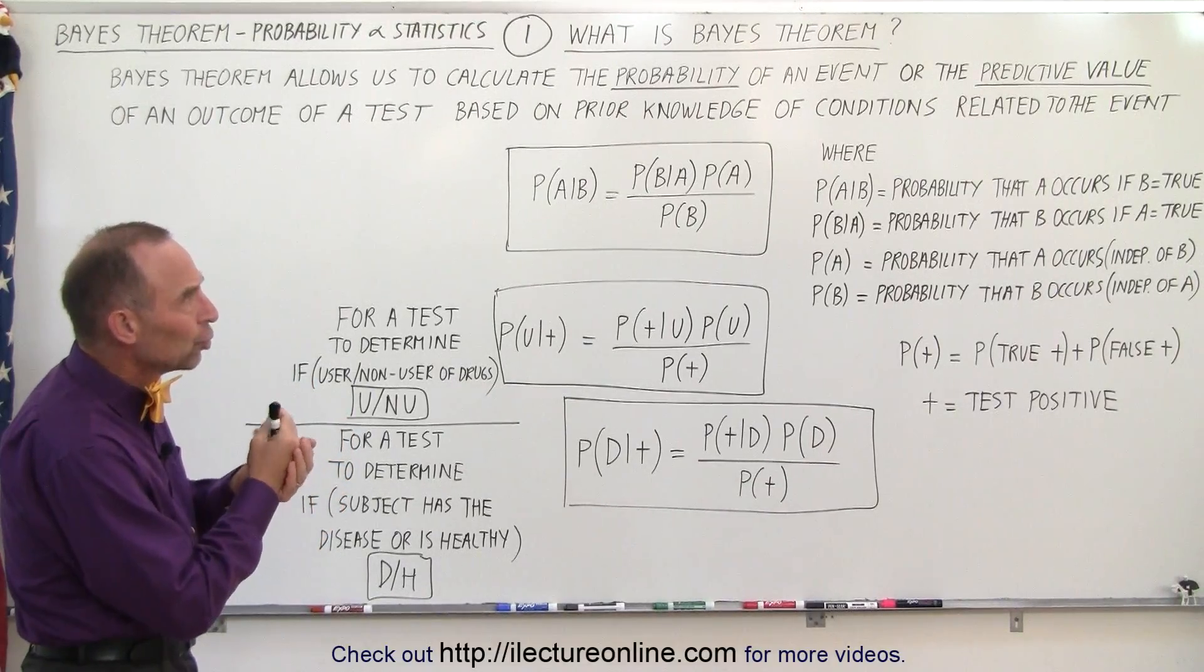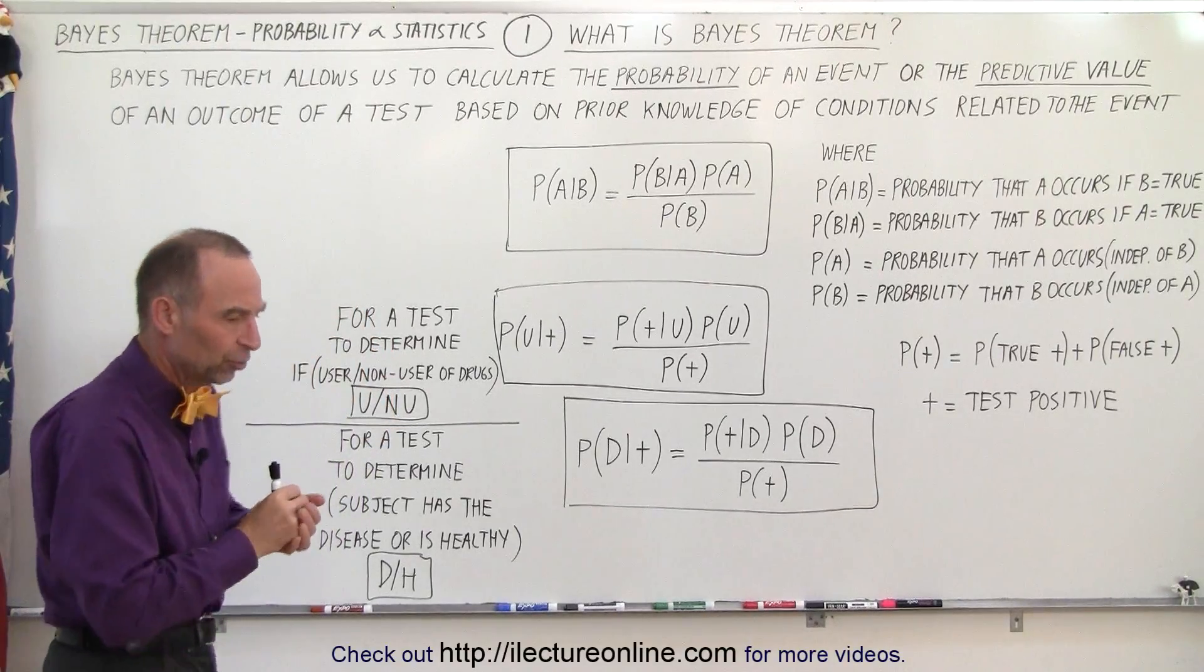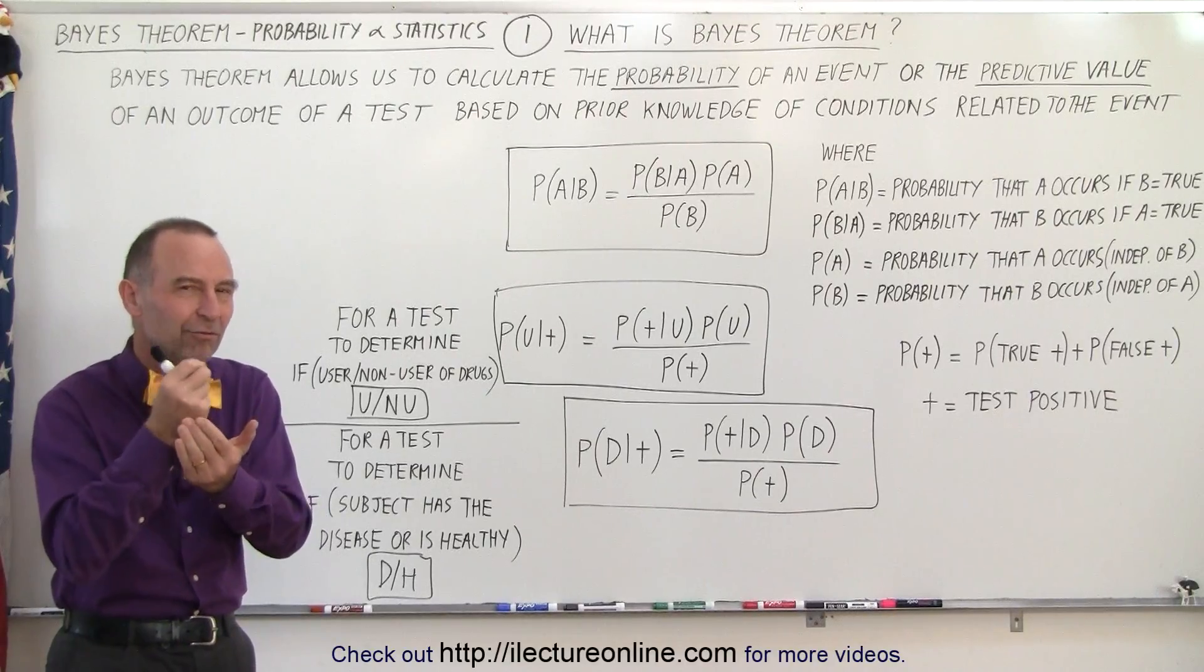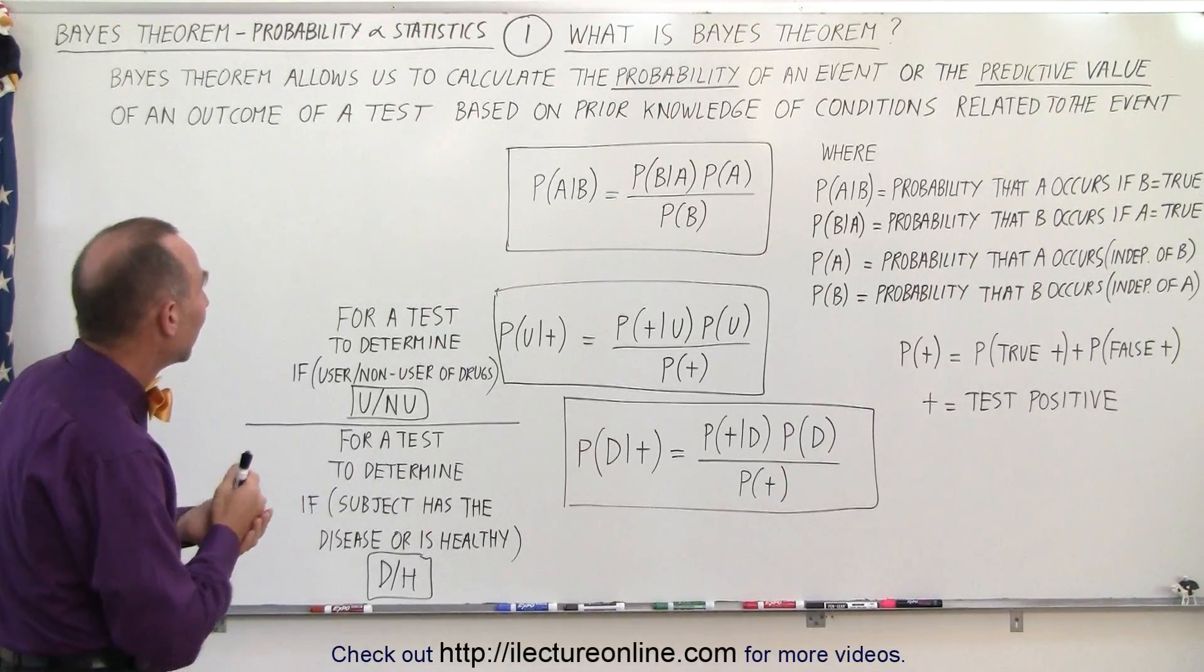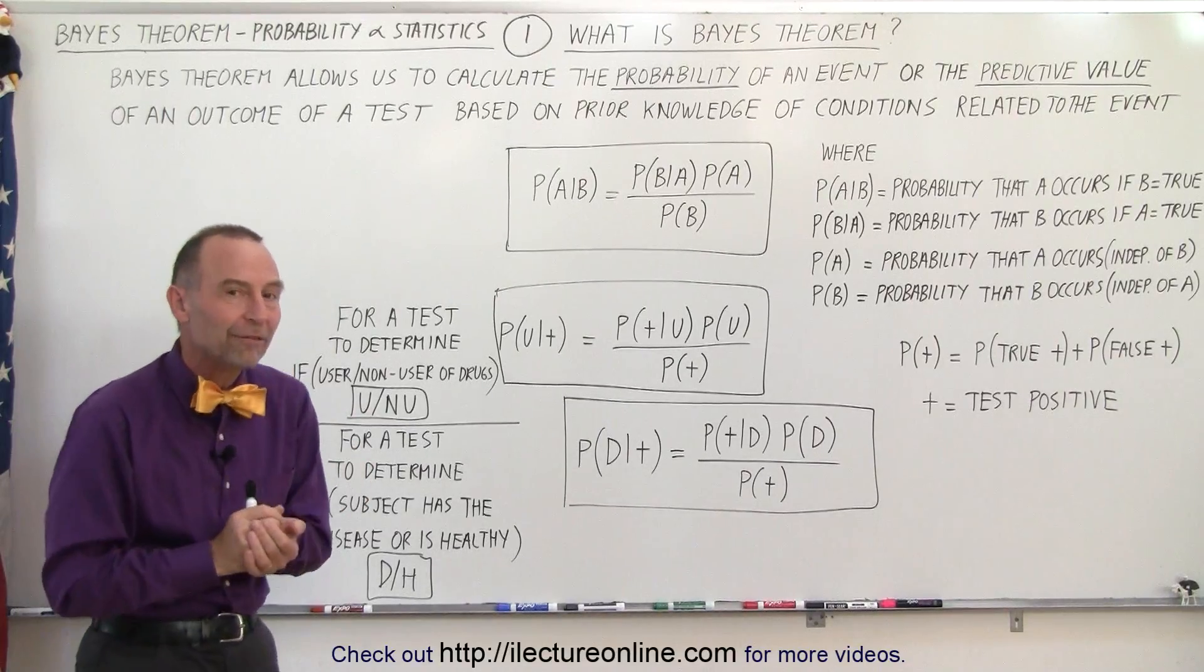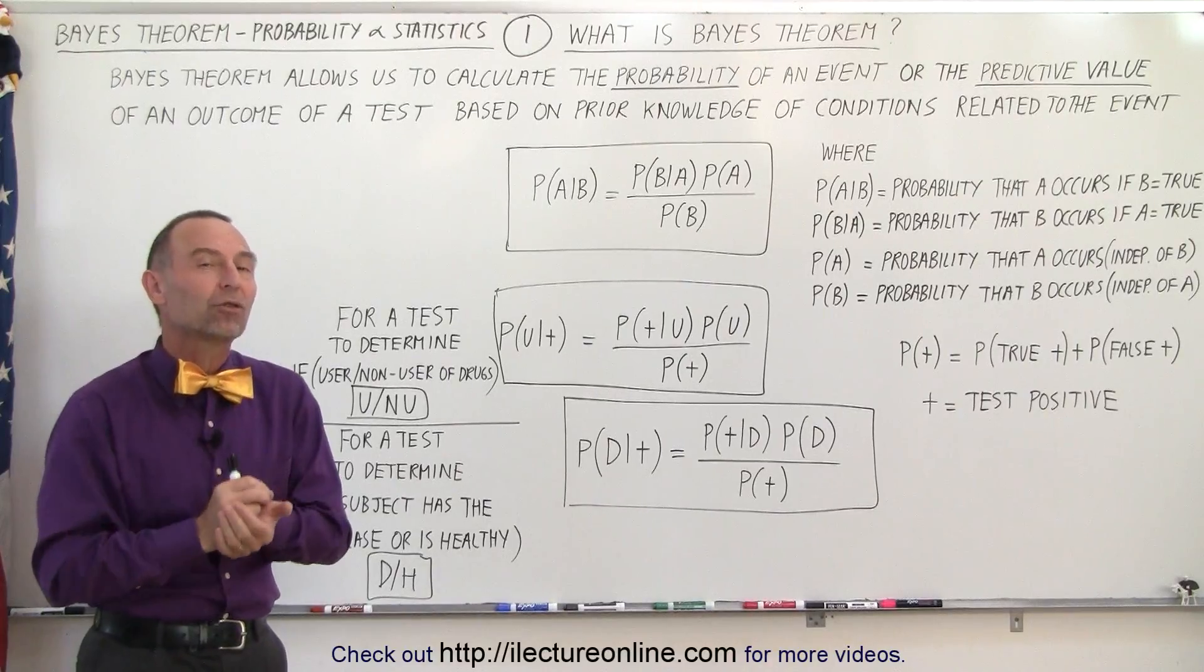A second thing that it can do is calculate the predictive value of an outcome. So we do a test, we get an outcome, and now we have to calculate some predicted value of that outcome. And it's based on prior knowledge of conditions related to the event. So there are some other conditions that the outcome depends on as well.